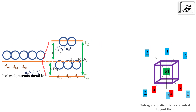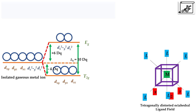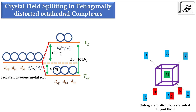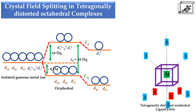Let's move to the crystal field splitting in tetragonally distorted octahedral complexes. In case of octahedral ligand field, the ligands are along the axis, they exert more effect on eg orbitals; t2g orbitals are lowered in energy by -4dq and the energy of eg set of orbitals is increased by +6dq. Now for tetragonally distorted octahedral complexes, the ligands along the z-axis move away from each other. Due to this, the repulsion along the z-axis is decreased and the energy of dz², dyz, and dxz is lowered.